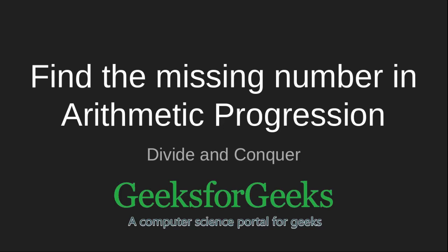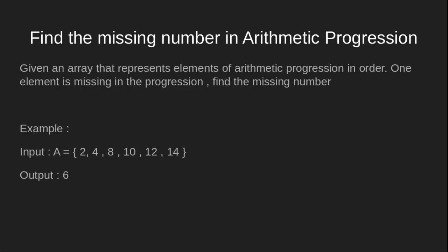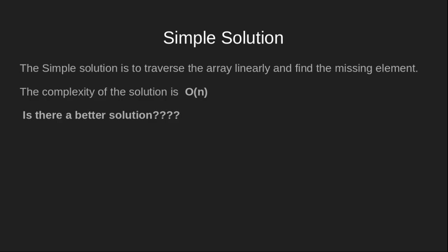Hello guys, today we'll learn how to find a missing number in an arithmetic progression using the divide and conquer technique. Our problem statement says that given an array that represents elements of an arithmetic progression in order, one element is missing in the progression. Find the missing number. For example, consider array A with elements 2, 4, 8, 10, 12, 14 — we have to find the missing element, so our output should be 6.